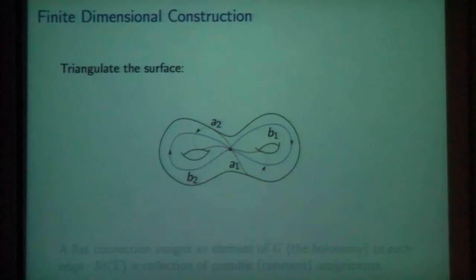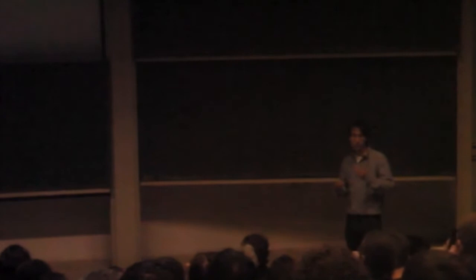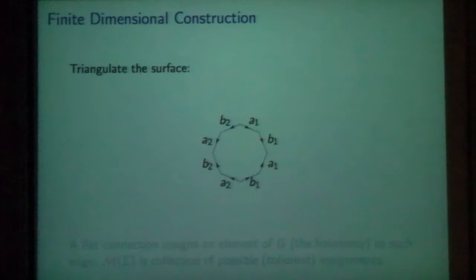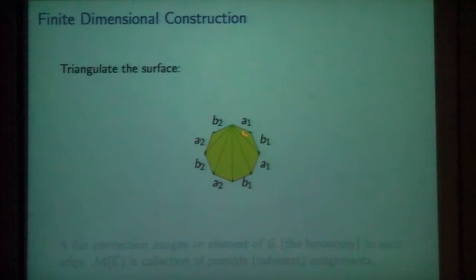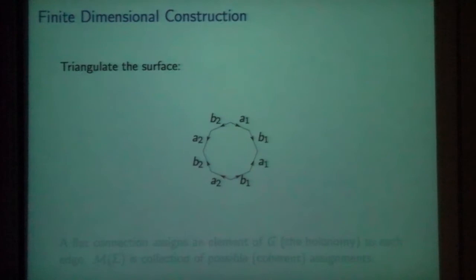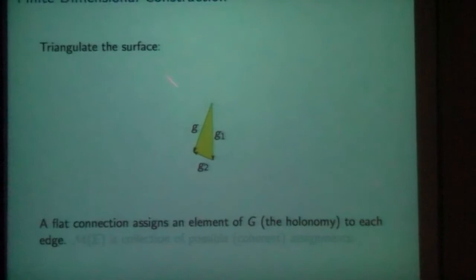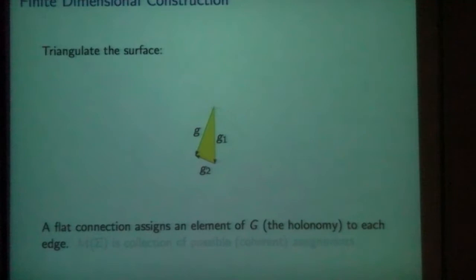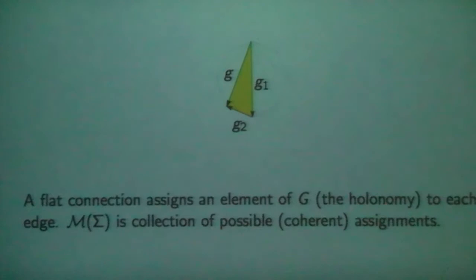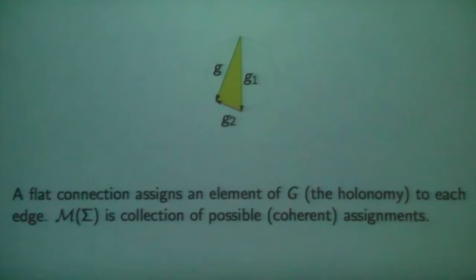Let's look at how to build the moduli space from a finite-dimensional picture. What we do is triangulate the surface — one way is to cut along principal cycles to get a polygon. A flat connection on a surface assigns an element of the structure group to each edge: that's the holonomy of the flat connection along that edge. The moduli space of flat connections is more or less the question of all possible consistent assignments of holonomy to the edges.